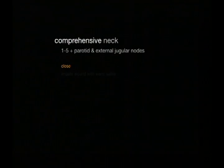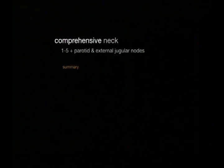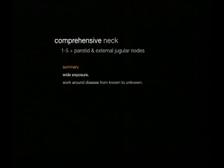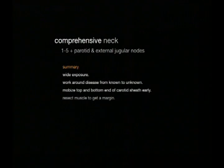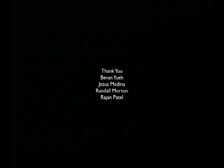We close by irrigating the wound with warm saline, performing a Valsalva, checking for a chyle leak, achieving hemostasis, and placing suction drains. In summary: when we have metastatic nodes, we go for wide exposure; we work around disease from a known area to an unknown area; we mobilize the top and bottom end of the sheath early; we do good muscle retraction; we need a good assistant; and we take external jugular nodes that are at risk.